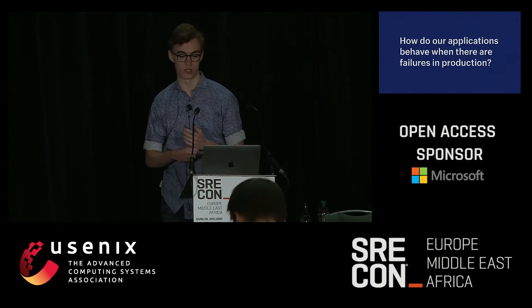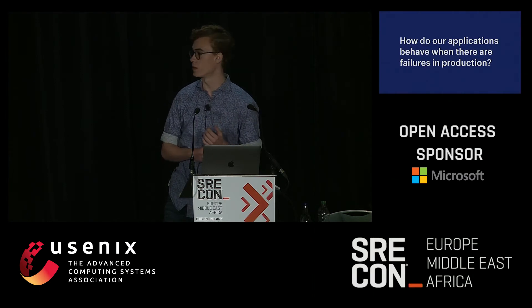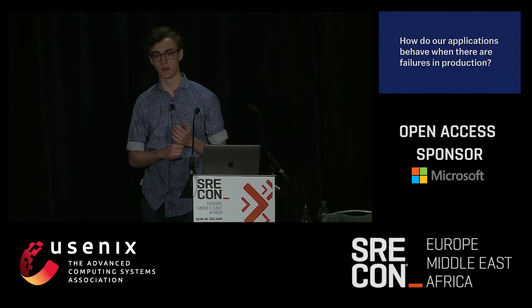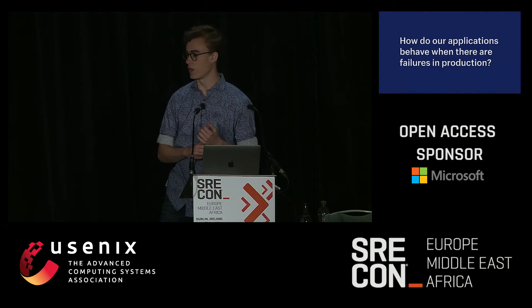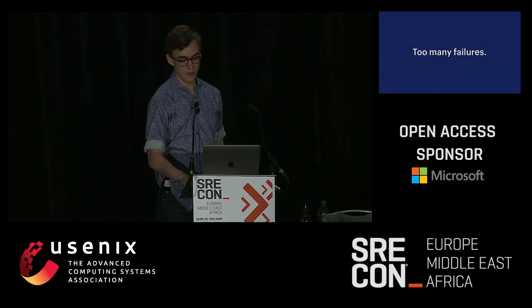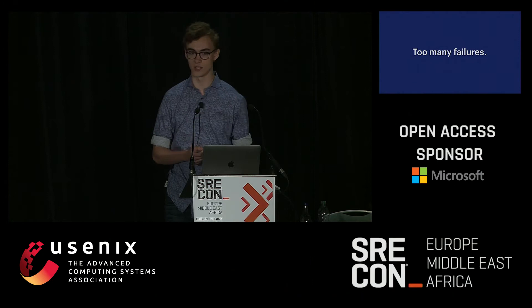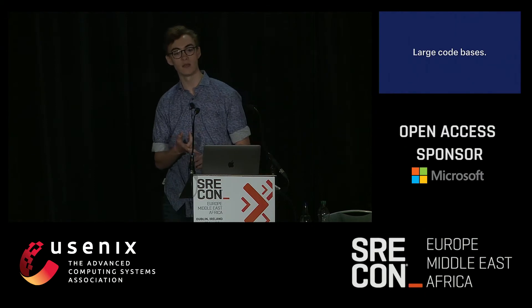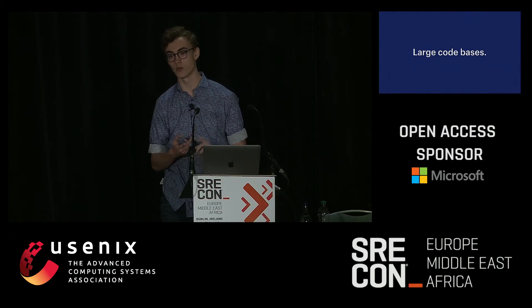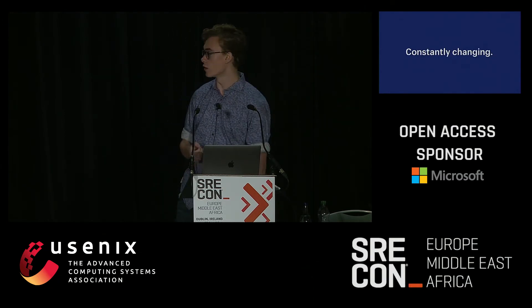Today we're talking about resiliency, and in the world of resiliency this is the big question: how do our applications behave when there are failures in production? This is really tough to answer for a few reasons. There are so many different kinds of failure scenarios that it's hard to enumerate them all. Even if we focus on a single kind of failure, it's hard to tell how our applications will react, because we have really large code bases that are constantly changing.